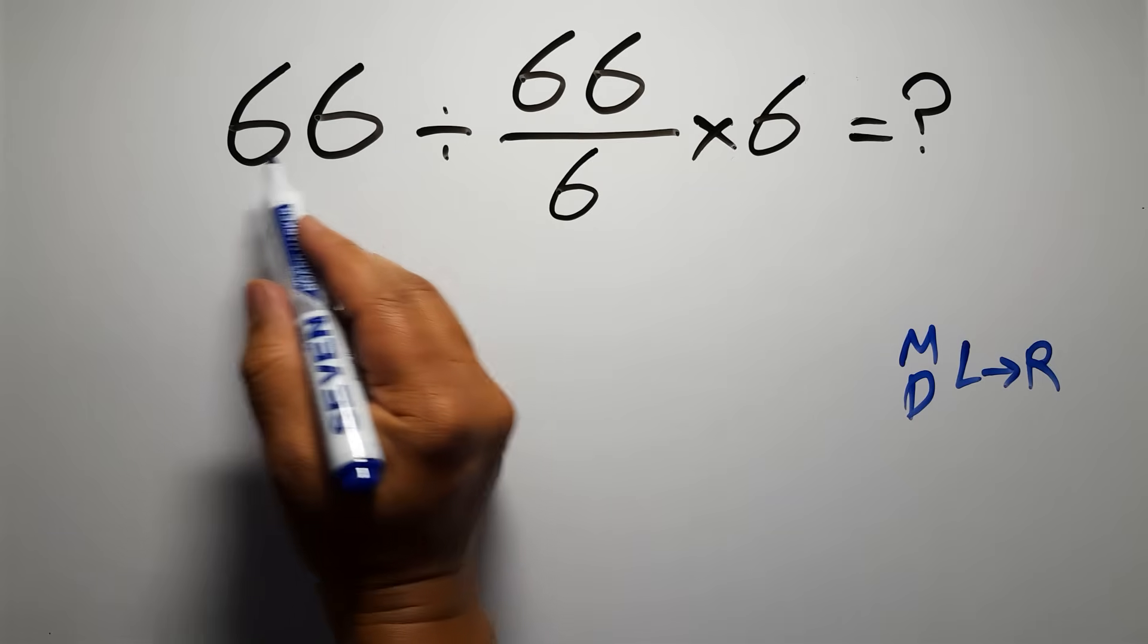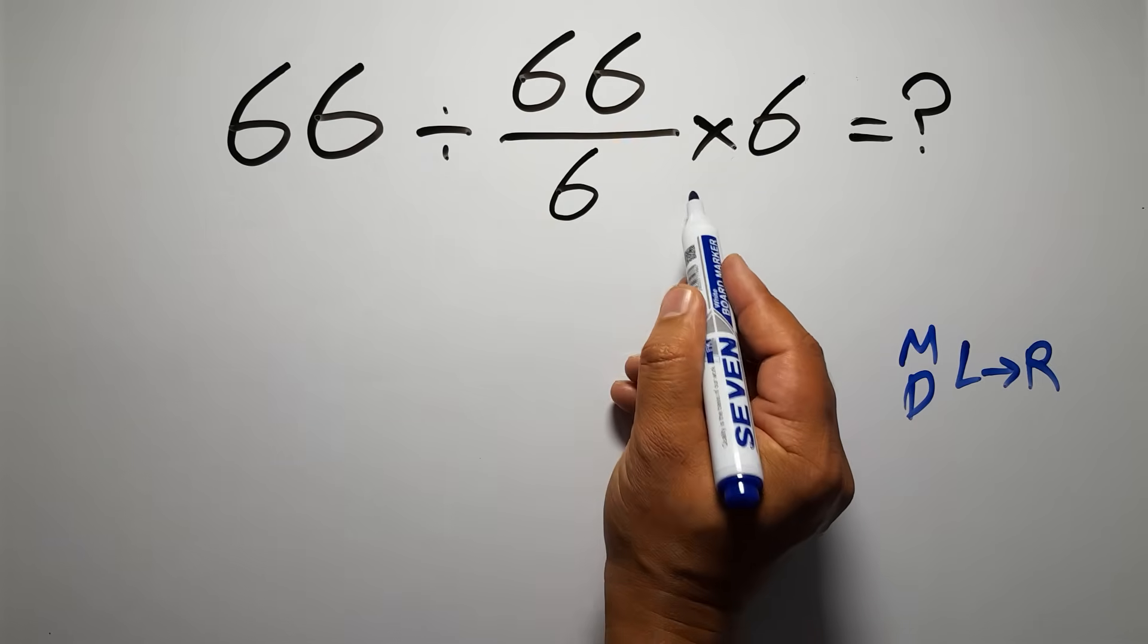So first this division: 66 divided by 66 over 6.